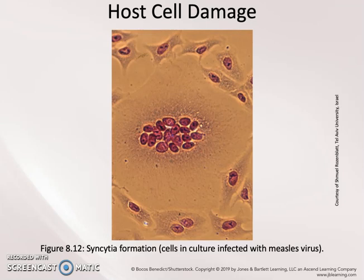Similar CPEs can be used to diagnose other diseases such as rabies. Rabies, instead of forming syncytia, can form cells that contain inclusion bodies or clumps of viral particles inside the host cell that are visible in the light microscope. These are referred to as Negri bodies and are unique characteristics found in host cells infected by the rabies virus.